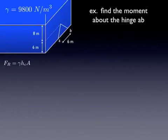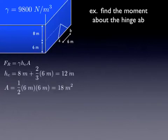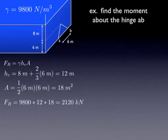We're going to start by calculating the magnitude of the force using that equation we've already derived. First, we need to know the distance from the water surface to the centroid of the object. It's 8 meters to get down to the top of the triangle, and then to get to the centroid of the triangle, it's another two-thirds down, giving us a total of 12 meters. Area of the triangle is one-half the base times the height. Now we've got everything we need to solve for the resultant force. It's 2,120 kilonewtons.